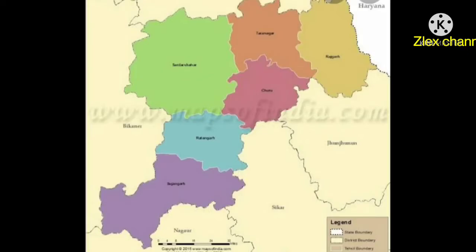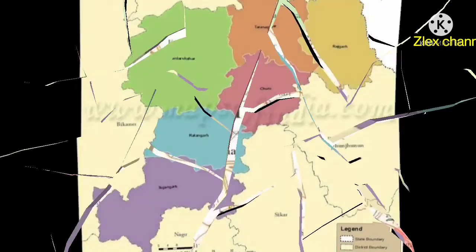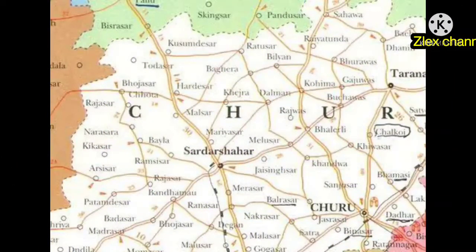Now let us discuss the location, population, and area of Churu. Geographically, the district lies at 28 degrees 80 north latitude and 74 degrees 58 east. Churu lies in the Bagad region of northern Rajasthan, and shares boundaries with Hanumangarh to the north, Haryana state to the east, Jhunjhunu and Sikar districts to the south-east, Nagaur to the south, and Bikaner district to the west.